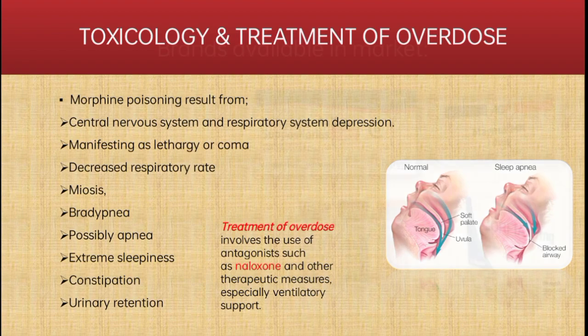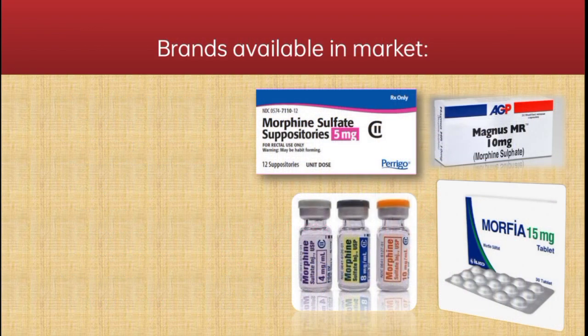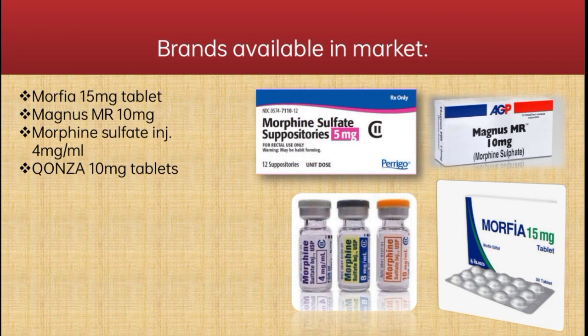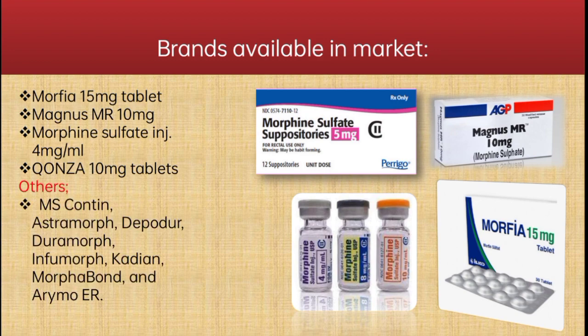The brands available in the market include Morphia 15 mg tablet, Magnus MR 10 mg, Morphine Sulfate Injection 4 mg/mL, and Conza 10 mg tablet. Others include MS-Contin, Astramorph, Duramorph, Avinza ER, etc.